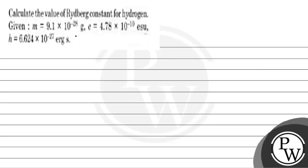Hello, let's see this question. Calculate the value of Rydberg constant for hydrogen. Given: m = 9.1 × 10^(-28) g, e = 4.78 × 10^(-10) esu, and h = 6.624 × 10^(-27) erg·s.